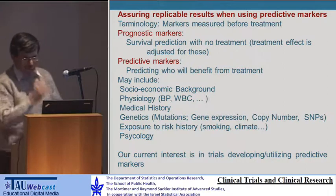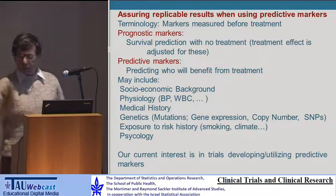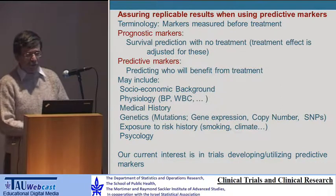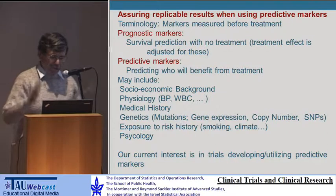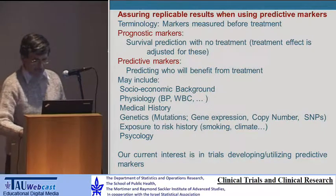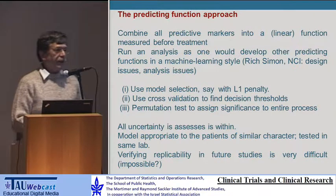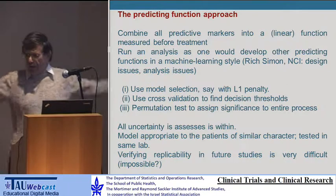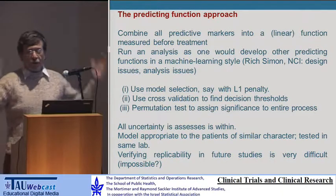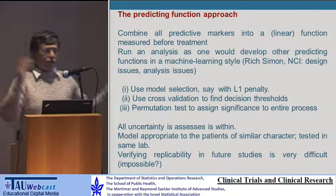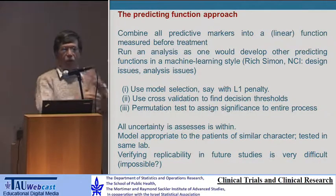The question is how do we assure replicability in the other parts? We have predictive markers — predicting who will benefit from treatment — which may include all of the components mentioned: socioeconomic, physiology, genetics, and so on. There are two approaches right now. One is the machine learning idea: you take everything in, develop a complicated model or signature, then try to verify it using cross-validation, permutation tests, all within the dataset you have. But if you have this formula, can you take it to new patients and be sure it will work there? There is essentially no way it's going to work there, and designing a study that handles this is almost impossible.